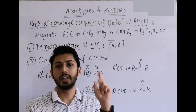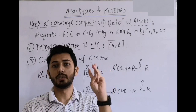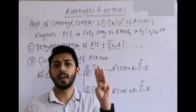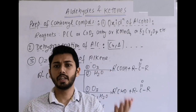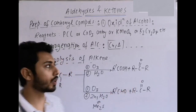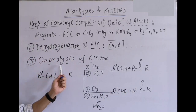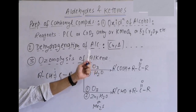Second reaction: dehydrogenation of alcohol using copper and heat. Primary alcohol gives aldehyde; secondary alcohol gives ketone; tertiary alcohol gives alkene — dehydration occurs and an alkene is formed. Third reaction: from hydrocarbons — ozonolysis of alkenes.